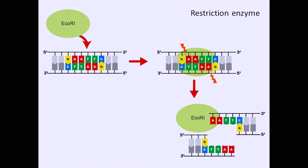Looking at it, the E. coli enzyme recognizes a six-base sequence like GAATTC. This six-base sequence is recognized, and the enzyme comes in with scissors and cuts it. But with only a six-base recognition sequence, many such sites exist in our genome of 3 billion AGCT bases. So it cuts everywhere, making it difficult to change only the target area.